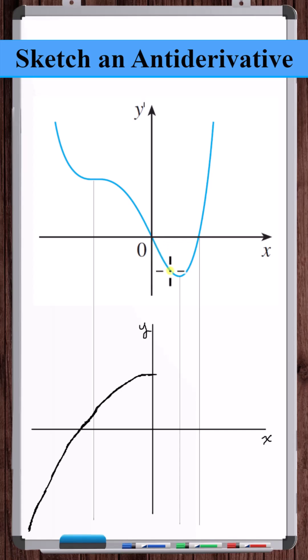Then the slope gets more and more negative and approaches a constant straight line negative value here. So something like this.